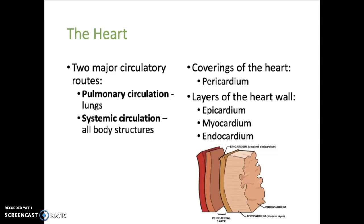The heart is located within a sac called the pericardium, which surrounds the entire heart. The heart wall itself consists of three layers. The epicardium is the outermost layer. The myocardium is the thick, middle, muscular layer. And the endocardium is the thinnest inner lining of the heart.